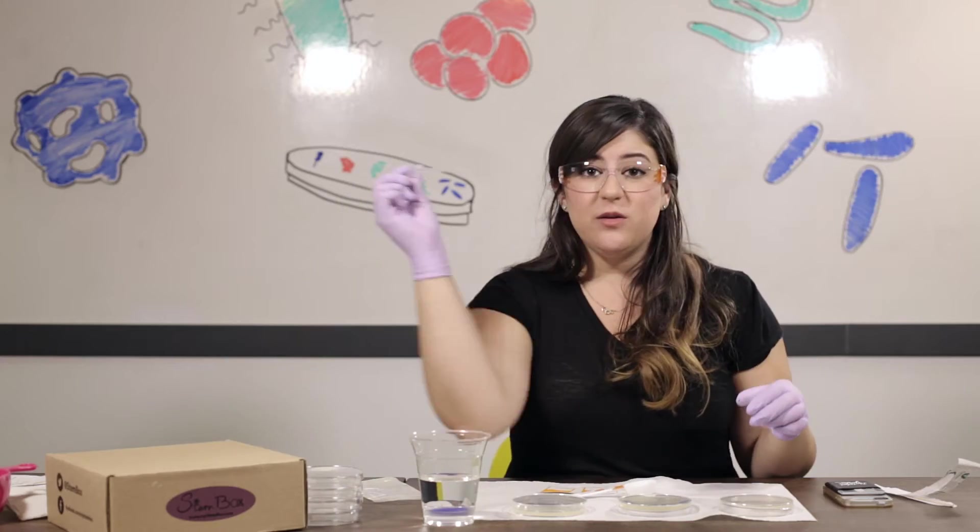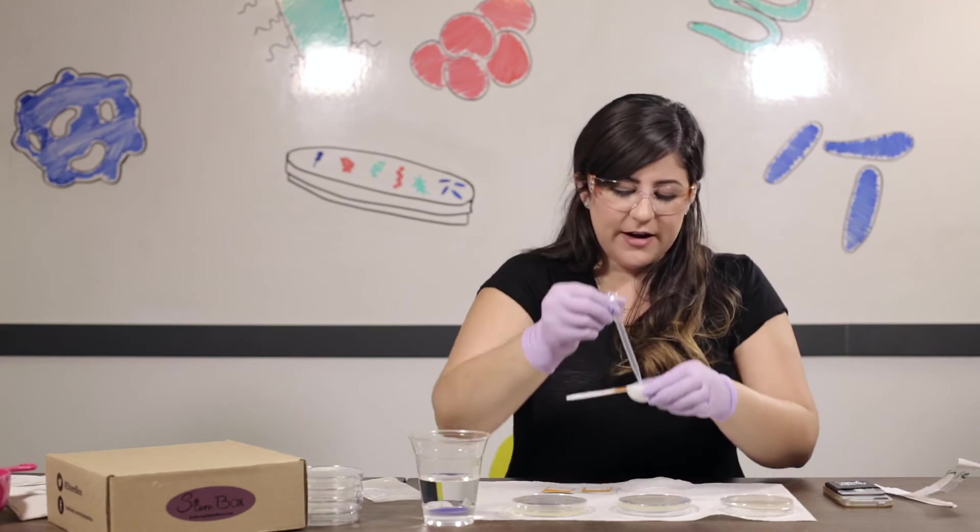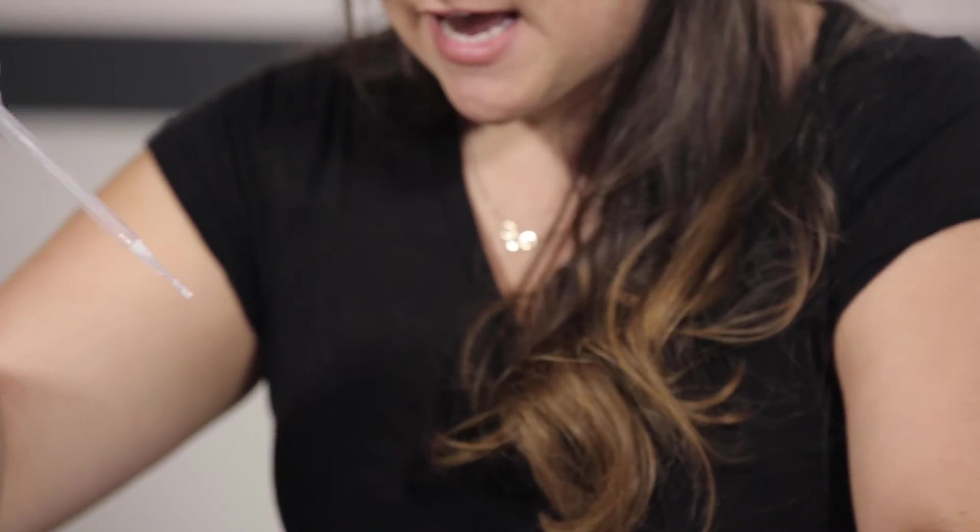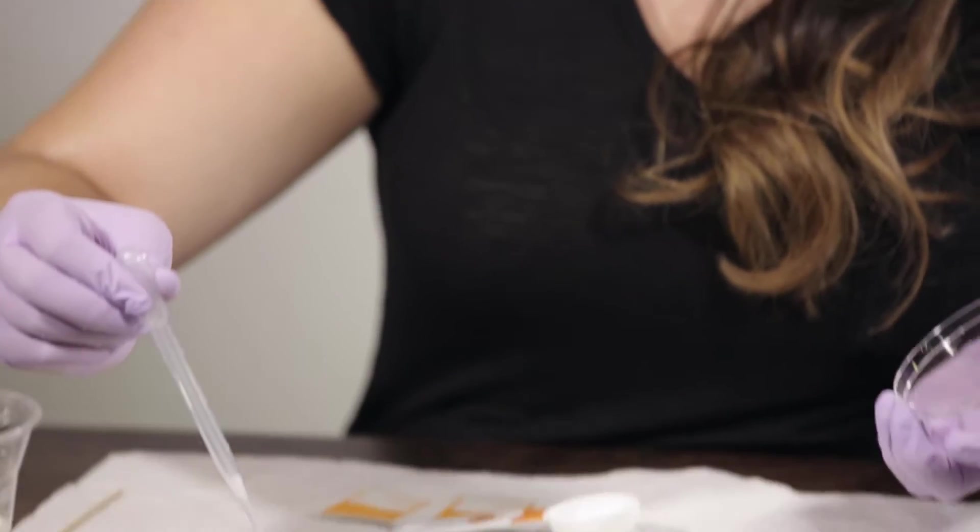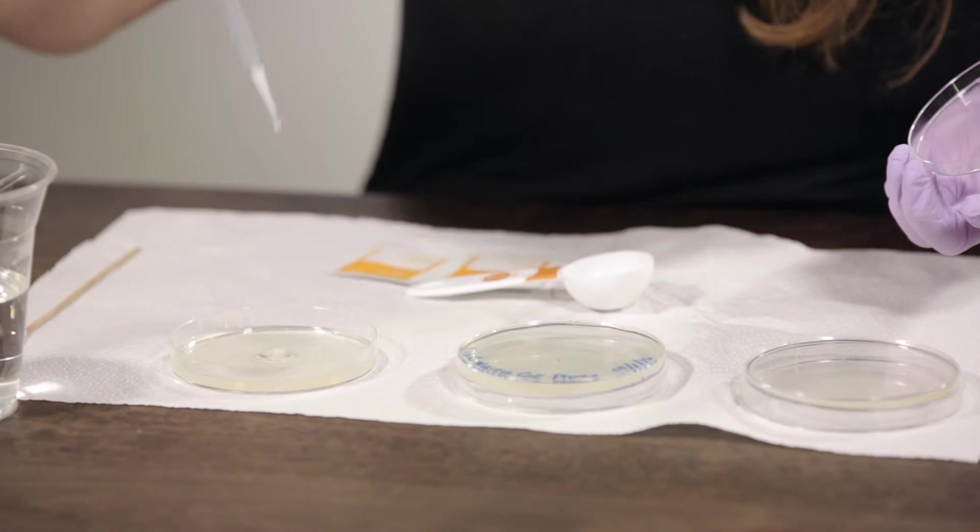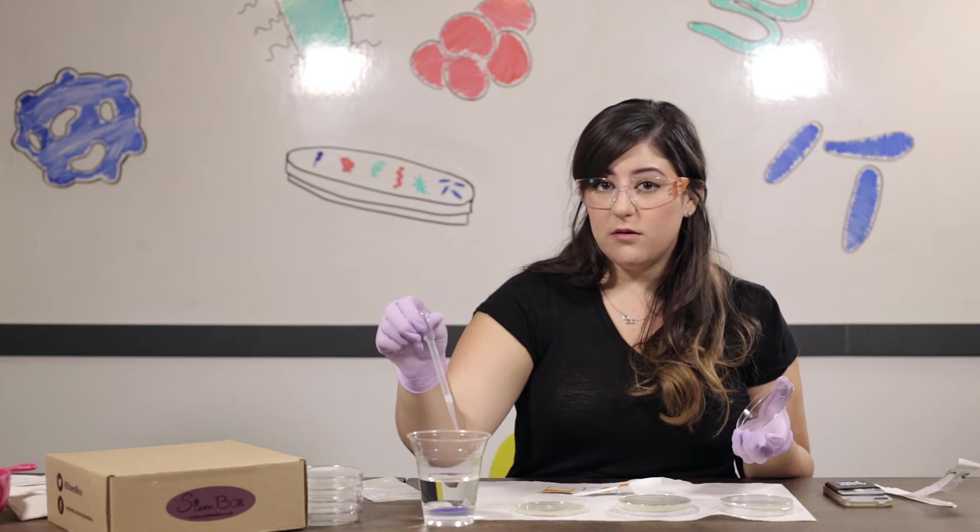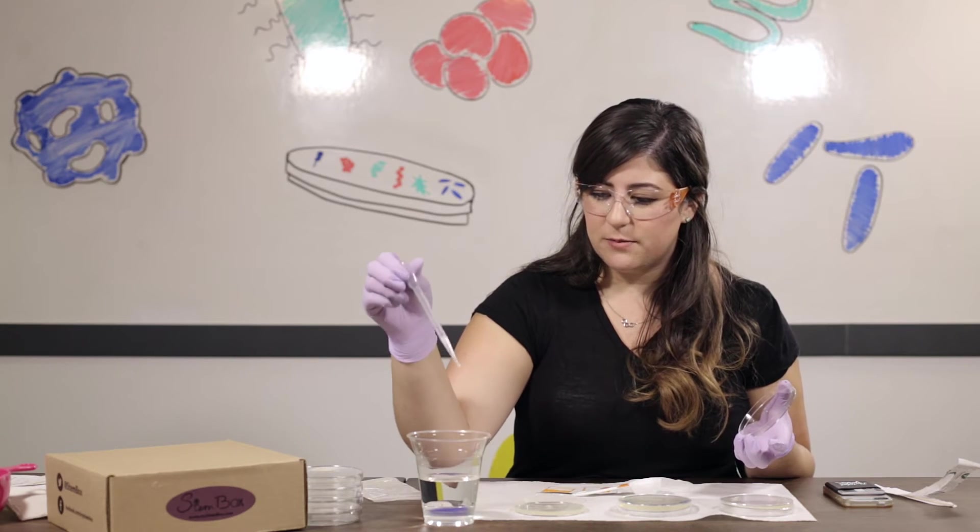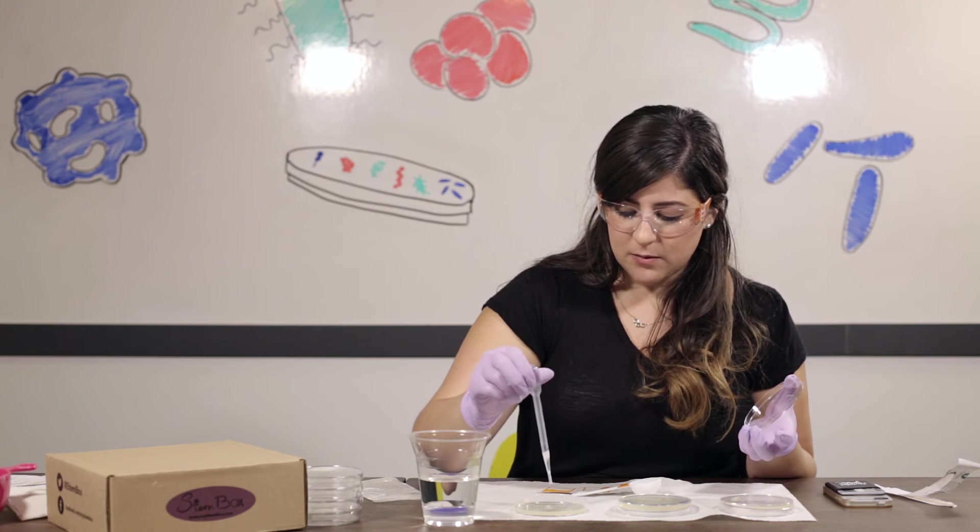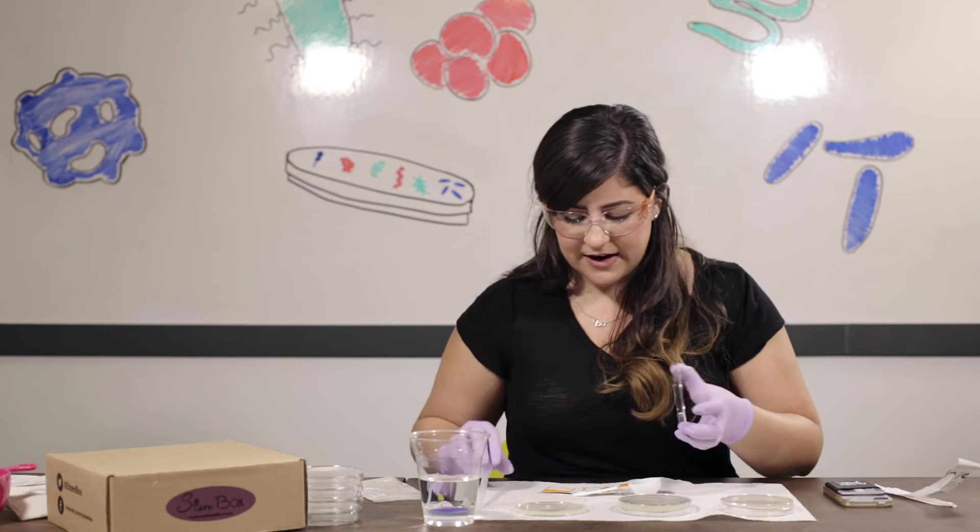And you're gonna use your pipette. You're gonna suck up some of the sample. Juicy. And you're gonna go ahead and drop it on the center of your plate. Oh, yeah. We're gonna add a little bit of water to it just so it has some room to spread. Just a few drops. That is extra slime.